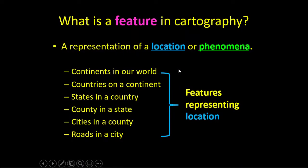A feature in cartography is a representation, symbol, or way to show a location or phenomenon. When we think about location, we have various types of features: continents, countries, states, counties, cities, roads, townships, block groups. Location types of features in geography are limitless — that's a blessing and a curse.